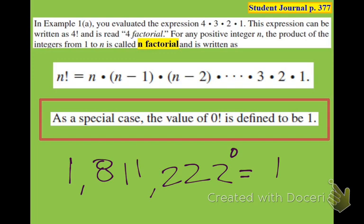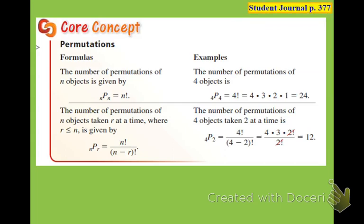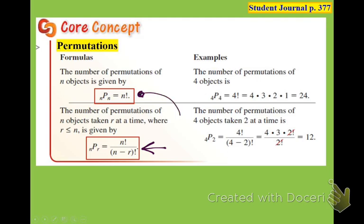This means whatever n is, that's the first number, then 1 less than that number, then 2 less, then 3 less. Here are the two technical formulas. The number on the left, n, will always be the larger number. If it's not, then you've set up your permutation wrong. So like if all of you are in a race, there would be 19 of you racing.